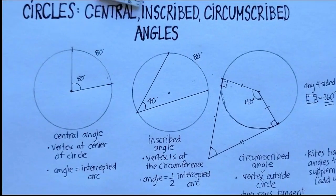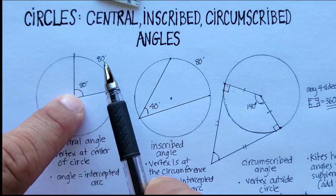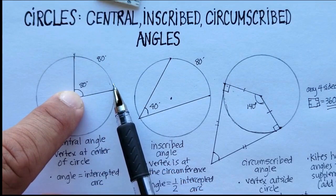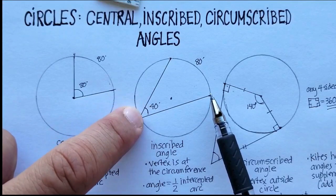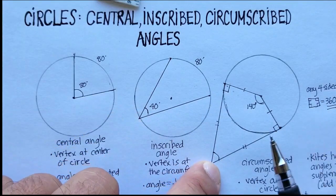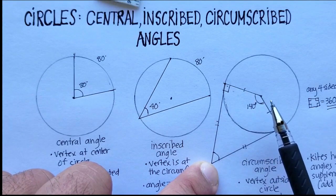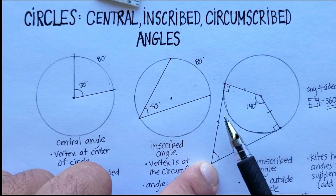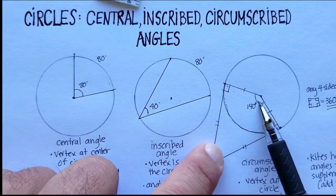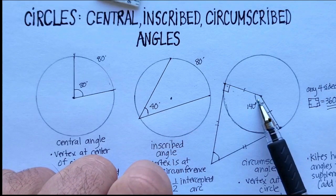In review: for central angles, the vertex is in the middle and the angle equals the intercepted arc. For inscribed angles, the vertex is on the circumference and the angle is one half the intercepted arc. For circumscribed angles, two tangent lines form perpendiculars to the center, creating a kite with two 90-degree angles, making the circumscribed angle and the central angle supplementary — adding up to 180 degrees.